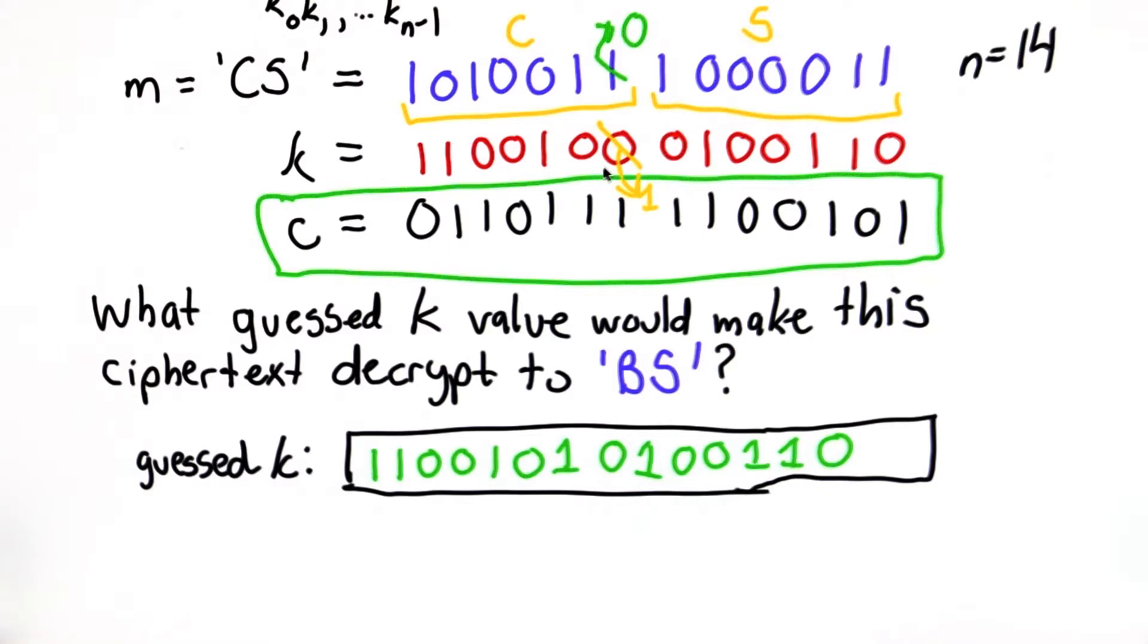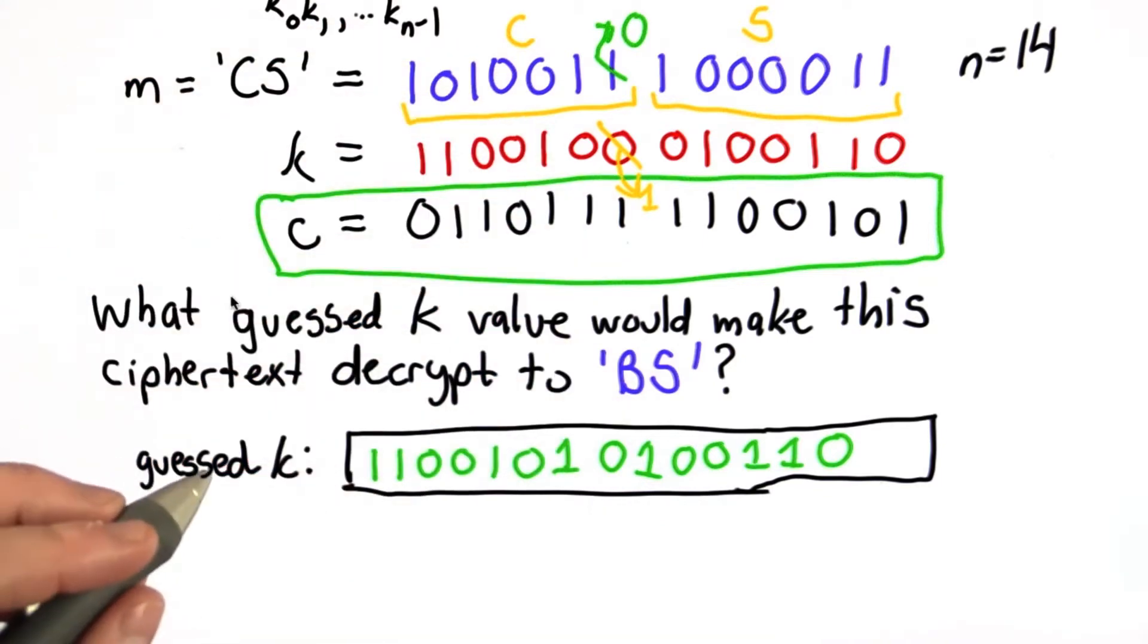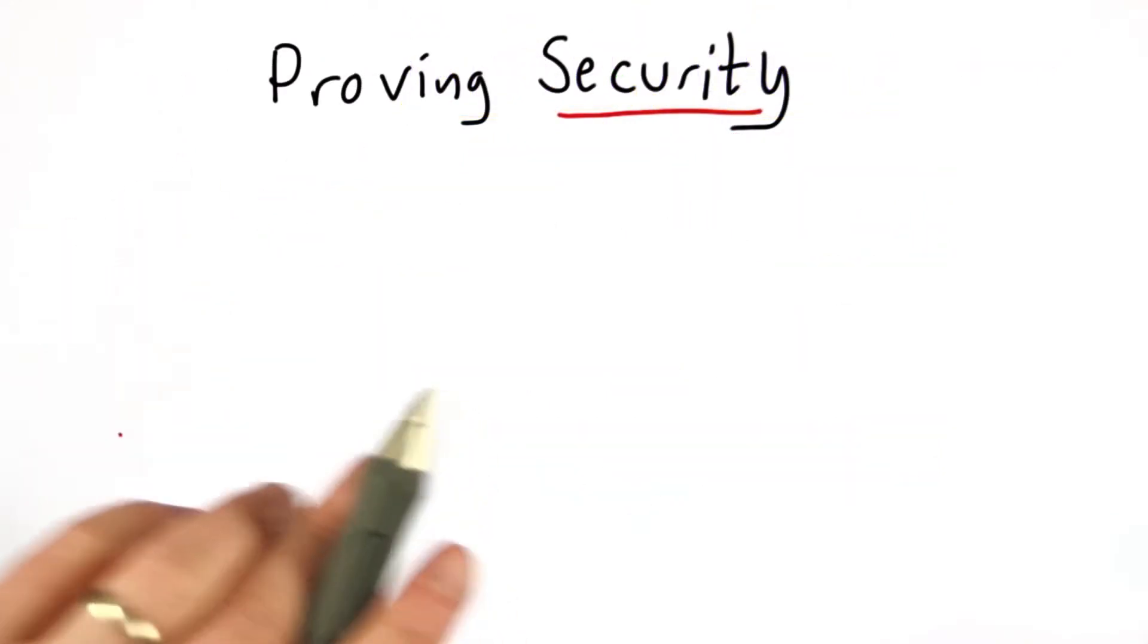But first I want to talk about how to prove security in general, and then we'll come back to the problem of how do we prove that the one-time pad is actually a perfect cipher. So how can we argue that a cipher is secure?